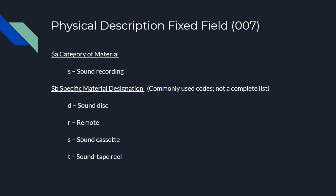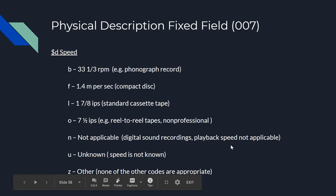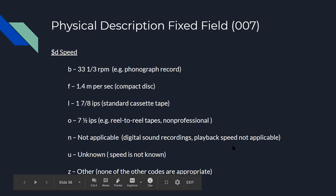Next we move to subfield B, our specific material designations. A few of the more common codes are for sound discs, remote which is for digital sound recordings, sound cassette, and sound tape reel. Subfield D is for the playback speed. Playback speeds include 33 and one third RPM for some phonograph records, 1.4 meters per second for compact discs, 1 7/8 inches per second for standard audio cassettes, and standard not-applicable, unknown, and other.